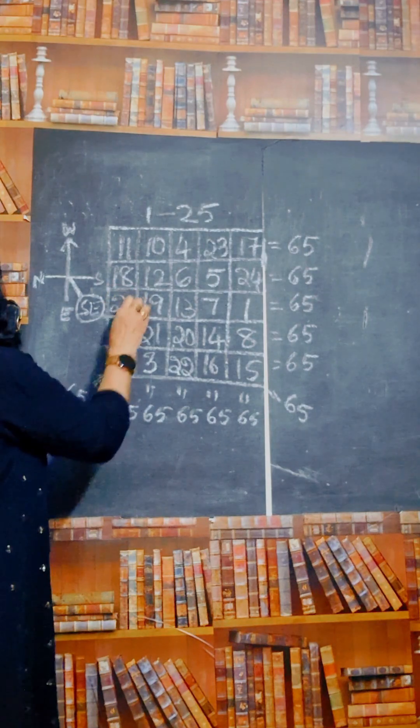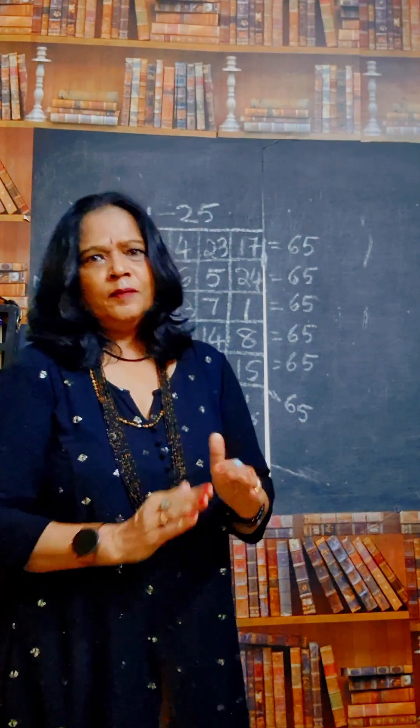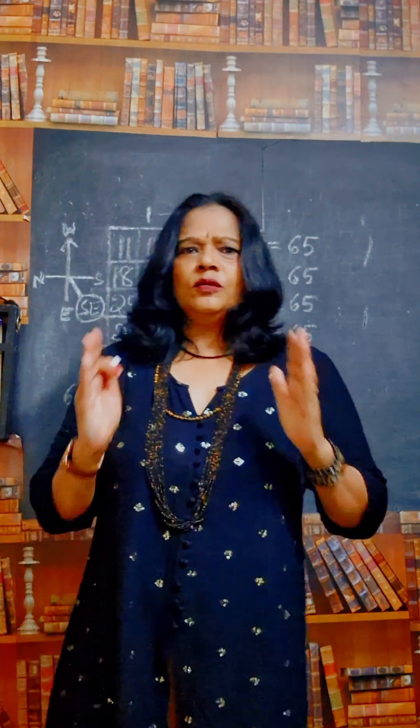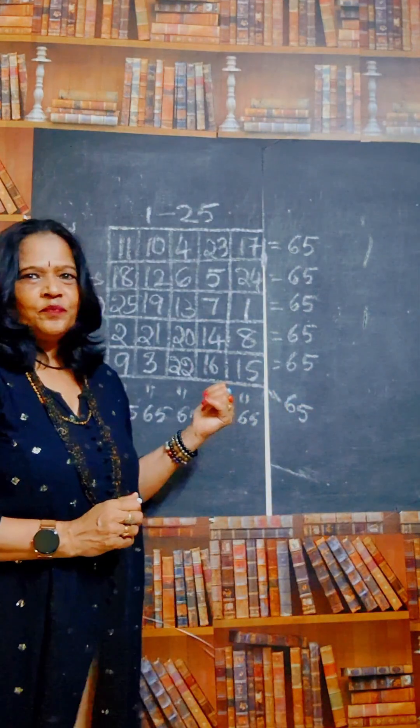You know the numbers 1 to 25. Now you count horizontal, vertical, diagonal—all will be total 65. See? You can check this.